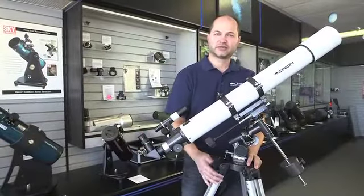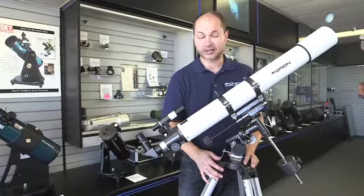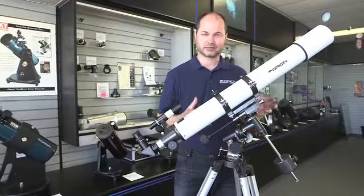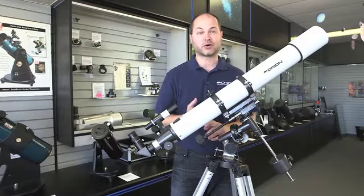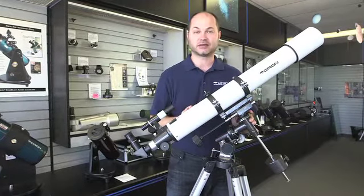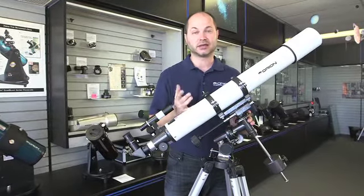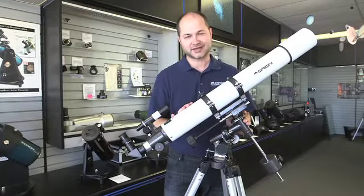All right, so there you have it. Those are some tips and techniques for using the AstroView 90 millimeter refractor, getting the best out of it and how the scope functions itself. I think you'll find that is a very nice telescope, great for lunar and planetary detail, and then bright enough for even some of the brighter deep sky objects like the Orion Nebula, Andromeda Galaxy, and a bunch of other things. All right, well thank you very much. Clear skies.